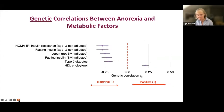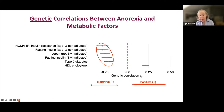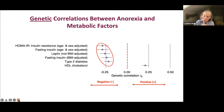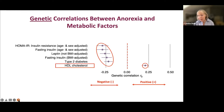Looking at genetic correlations between anorexia and metabolic factors, we see primarily negative genetic correlations — between anorexia and fasting insulin, insulin resistance, and type 2 diabetes. In other words, some of the same genetic factors that increase your risk of developing anorexia nervosa place you at decreased risk for developing type 2 diabetes. The only positive genetic correlation on the metabolic panel was with HDL cholesterol — the only favorable metabolic parameter we examined.